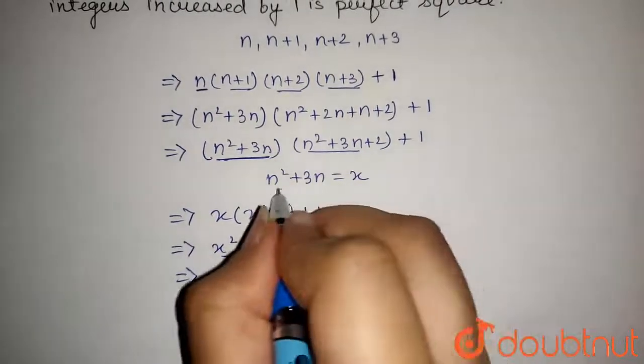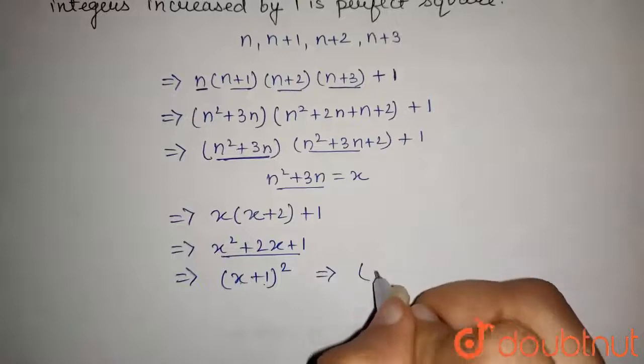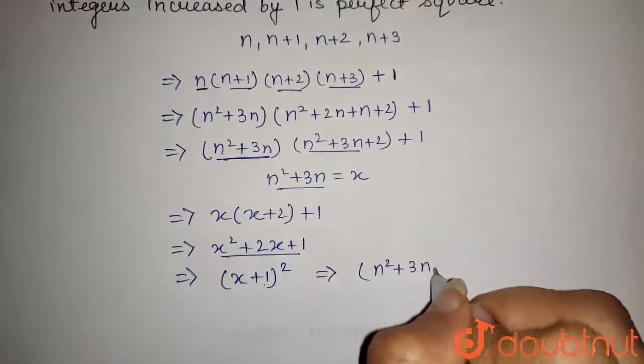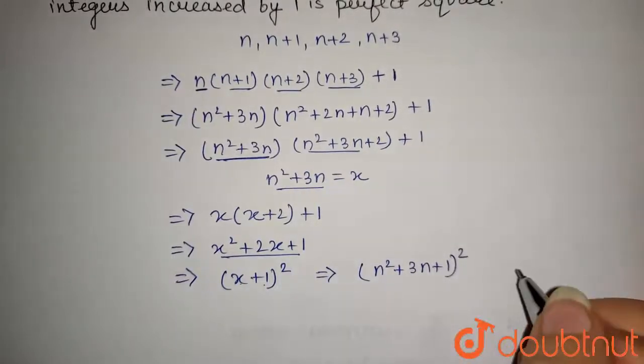Now, on substituting the value of x in this, we get n square plus 3n plus 1 to the whole square.